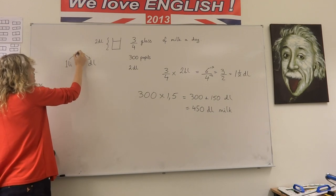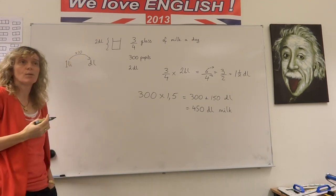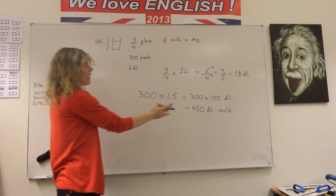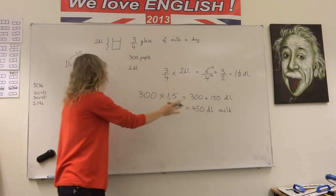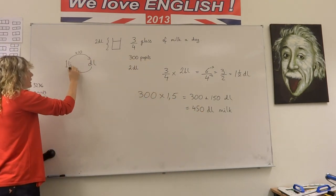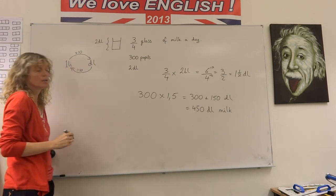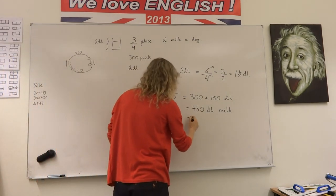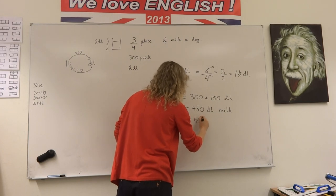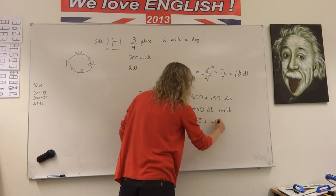Ten deciliters in one liter. So if we have 450 deciliters of milk and we'd like to take it back to liters, we have to divide by ten. So we'd have 450 deciliters of milk or 45 liters of milk.